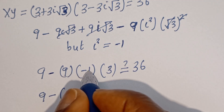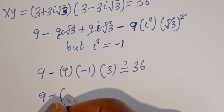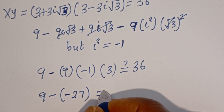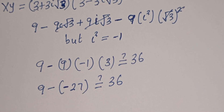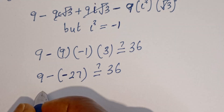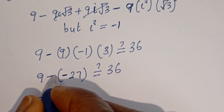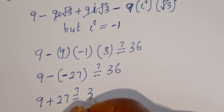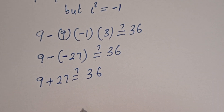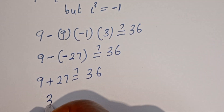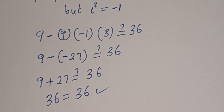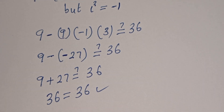So we have 9 minus times minus 27, that is plus 27, must be equal to 36. Then 9 plus 27 equals 36, which is equal to 36 — which is also true! I hope you enjoyed the video. Thank you for watching. Please don't forget to like, share, comment and subscribe to my channel. Bye!